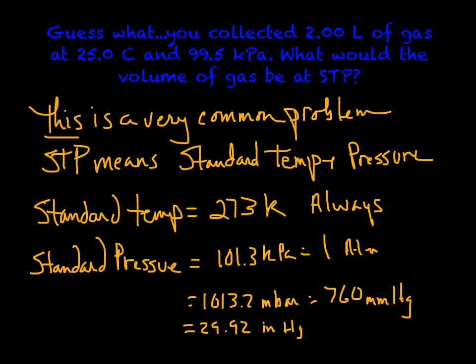Well, this is a very common problem. STP means standard temperature and pressure. Standard temperature is always 273 Kelvin, always. And standard pressure—I actually gave you these values a while ago when we were doing pressure conversions—it can be 101.3 kilopascals, one atmosphere, 1013.2 millibars, 760 millimeters of mercury, or 29.92 inches of mercury.